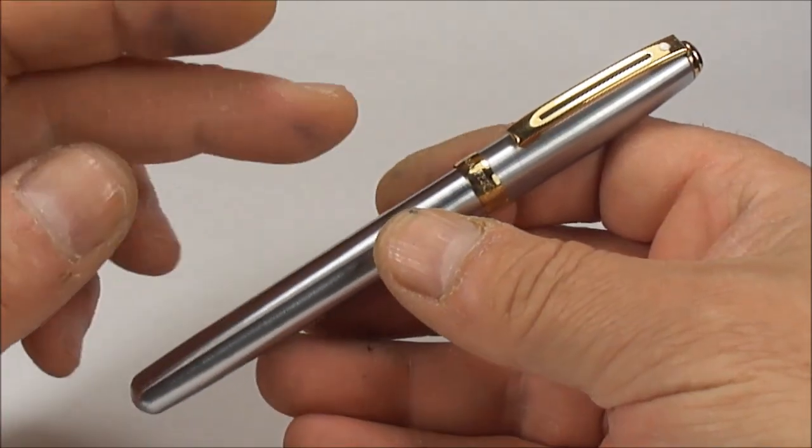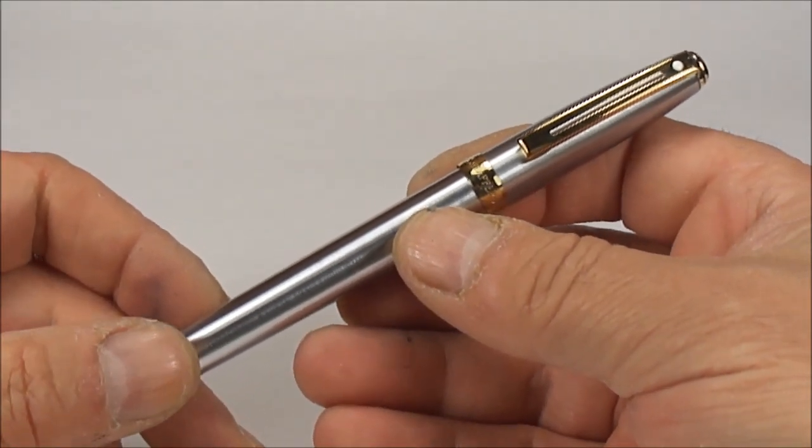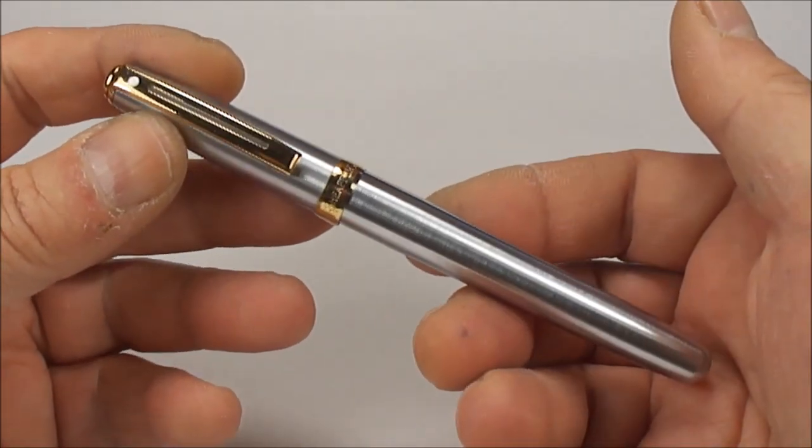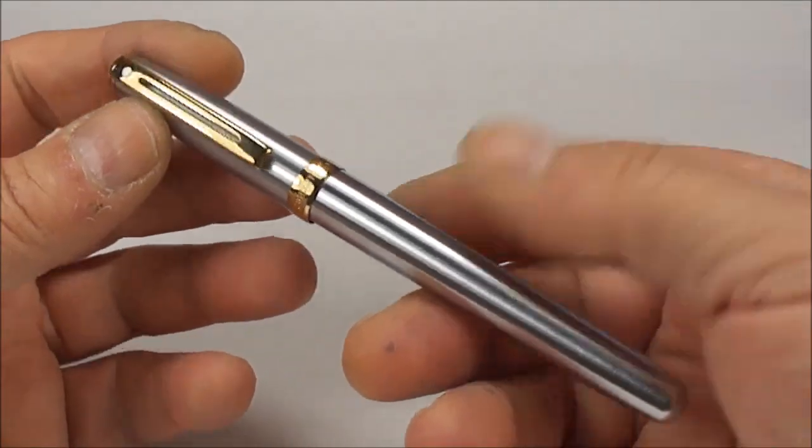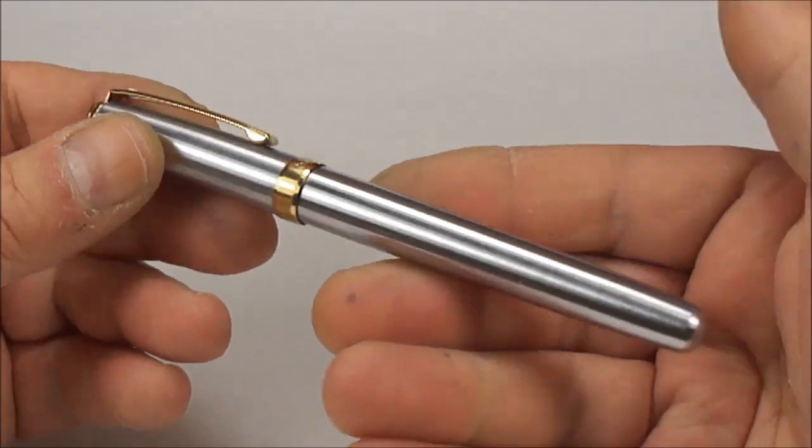So there we have it. It's a Sheaffer Prelude in brushed chrome with 22 carat gold plated trim, a lovely two-tone nib, and I believe still a current model. A very nice pen.